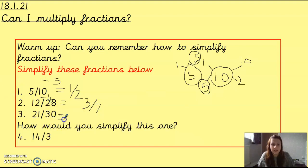Then this one, we would do our factor bugs again. And we would find 3 in common. So 21 divided by 3 should have given you 7, and 30 divided by 3 should have given you 10. So that's the answer to the first 3: 1 half, 3 sevenths, and 7 tenths.